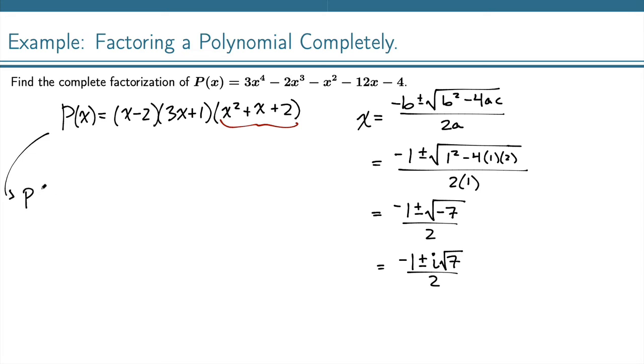So coming down here now, I've got p(x) = (x - 2)(3x + 1), and then with the -1 + i√7 over 2, I have x minus that zero, -1 + i√7 over 2.